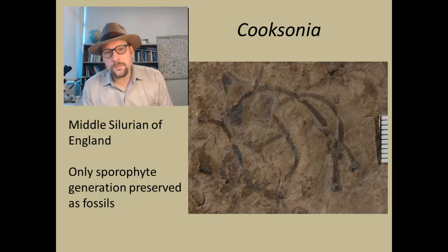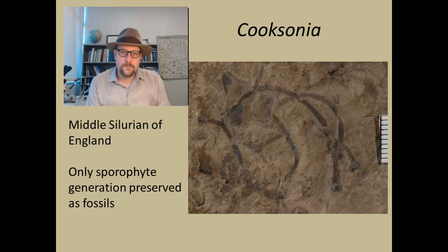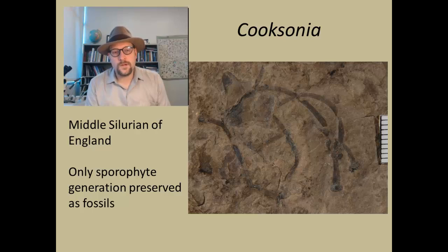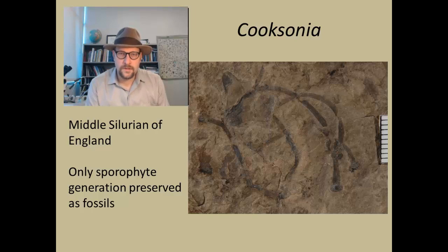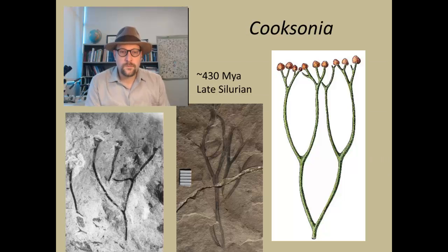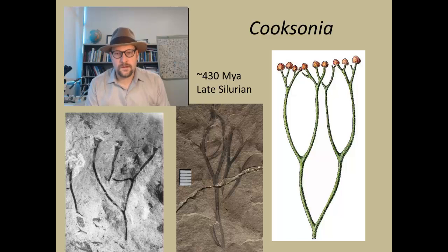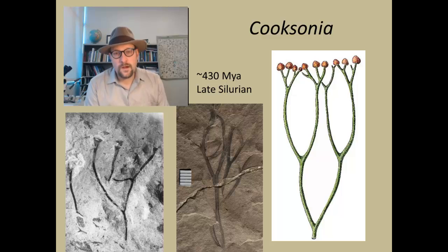Now probably one of the most famous early land plants is Cooksonia. Cooksonia was discovered many years ago in England, in the middle to late Silurian, and what's really interesting about Cooksonia is that the only indication we get in the fossil record is of the sporophyte generation. We don't get any of the leafy parts of this fossil bryophyte — we only get the portion that produces spores on top of these stalks. On top of these stalks are the spore-producing portions of the plant.